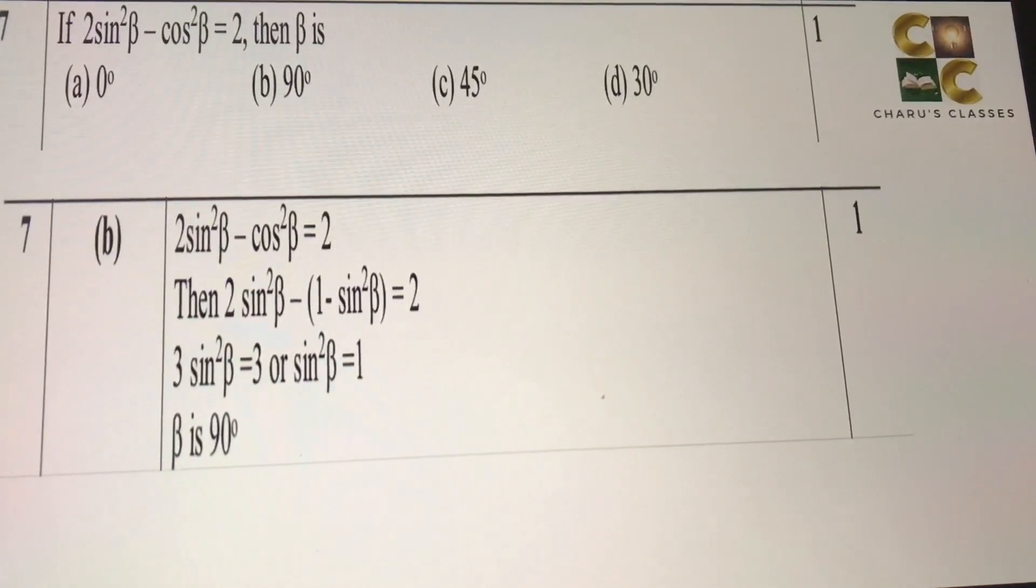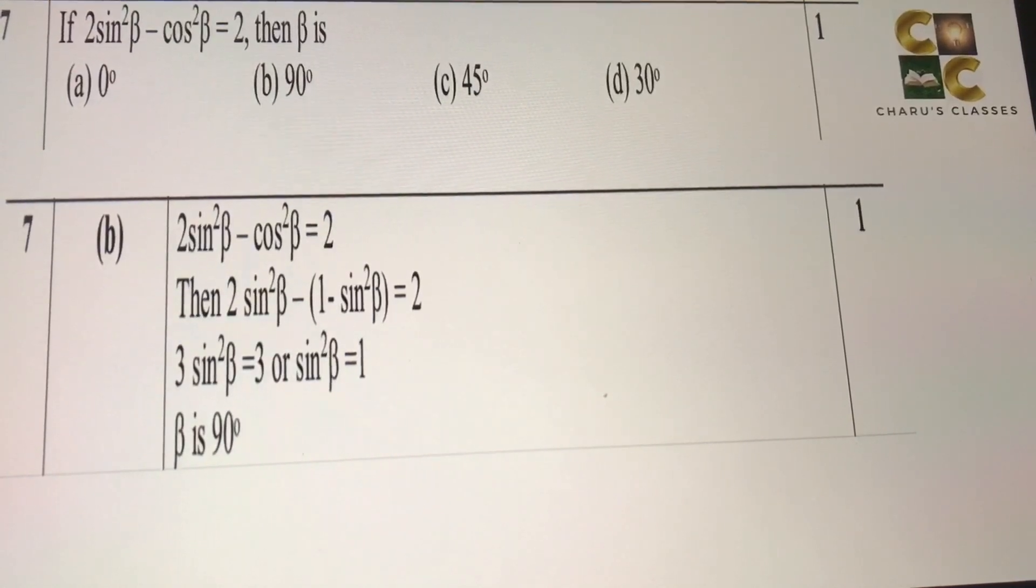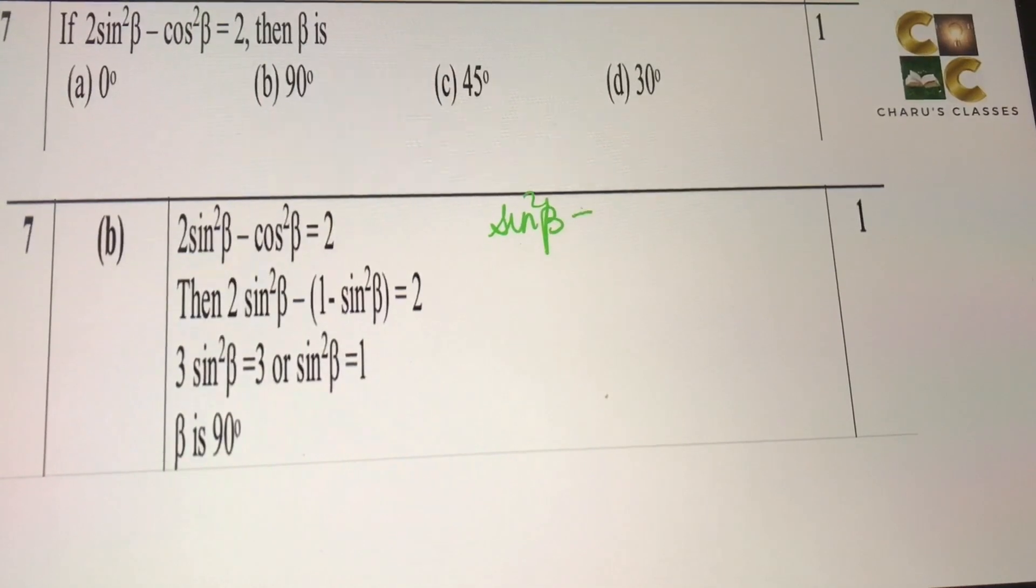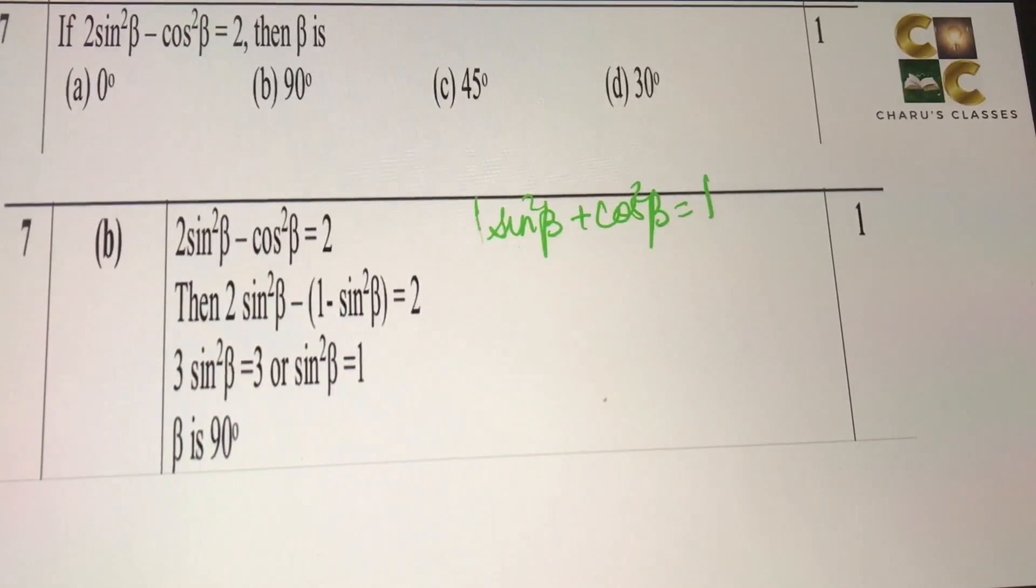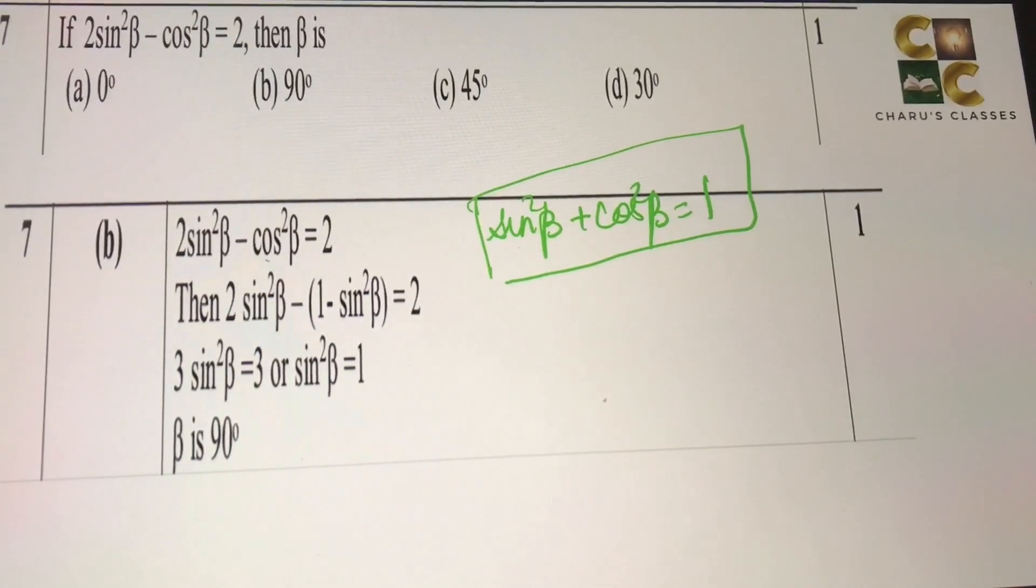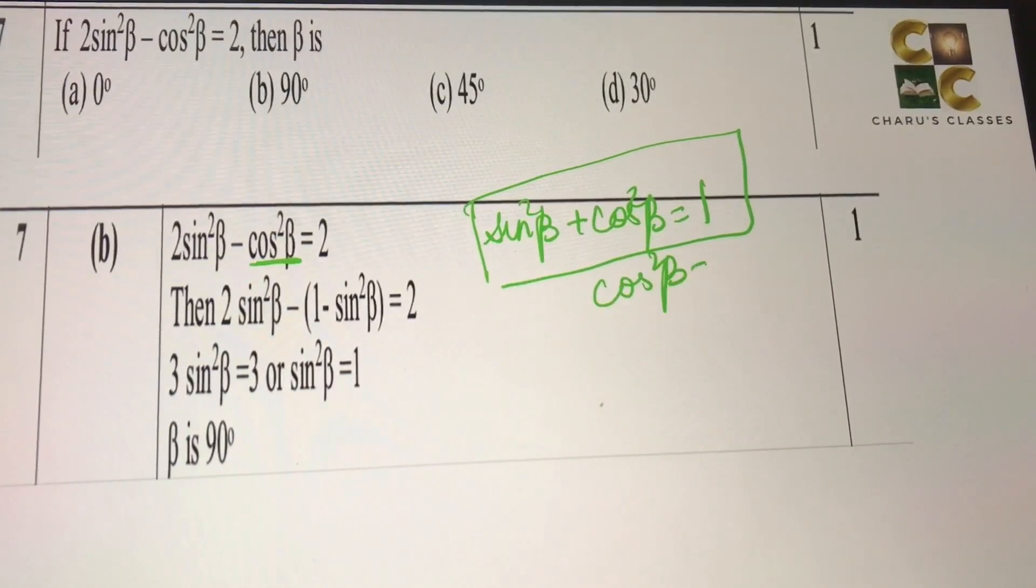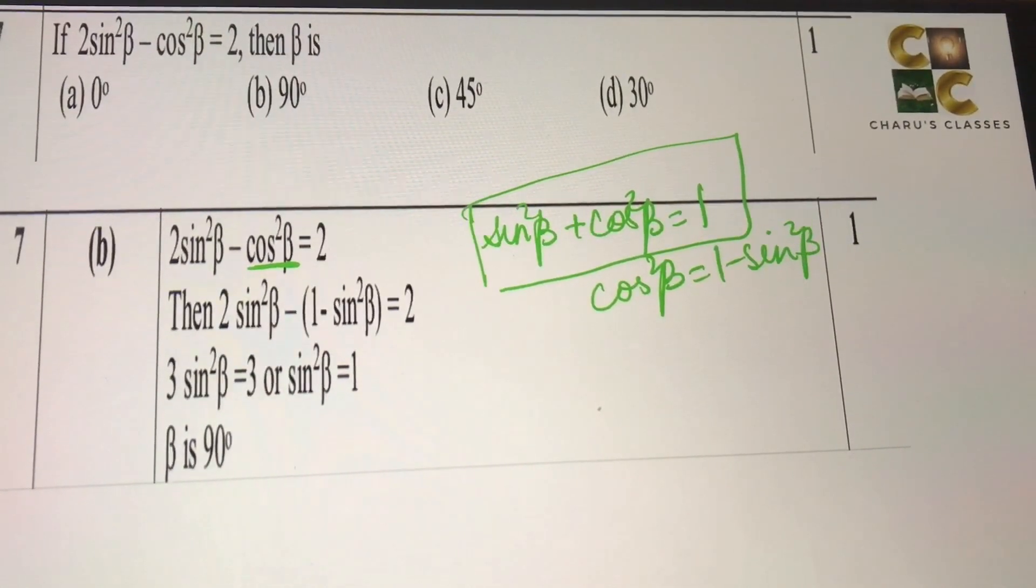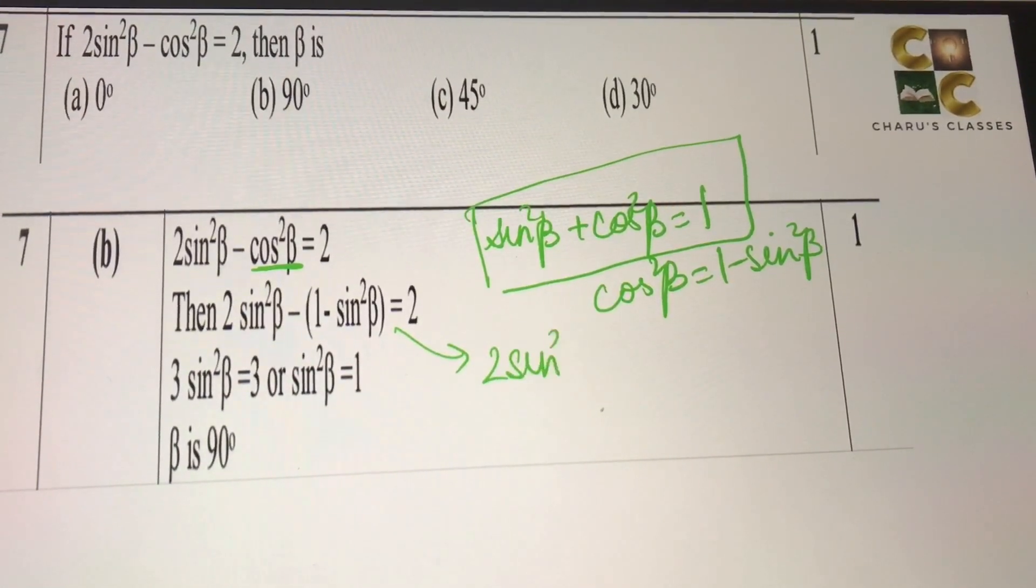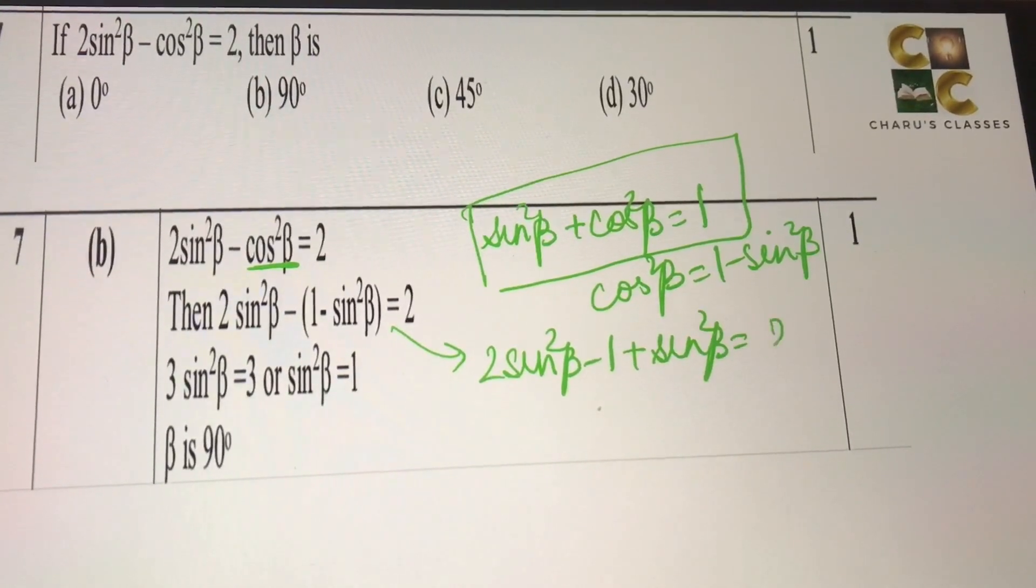Seventh question: if sin square beta minus cos square beta is 2, then beta is what? We know that the first identity, that is sin square beta plus cos square beta is equal to 1. So we are going to use this here. Here where cos square beta is, in its place I can write it as 1 minus sin square beta. So solving this, we have 2 sin square beta minus 1, minus minus becomes plus, so plus sin square beta equal to 2.